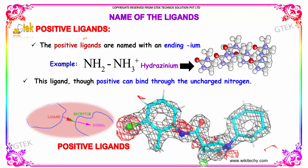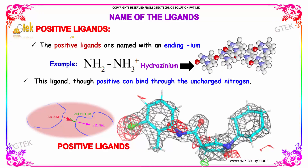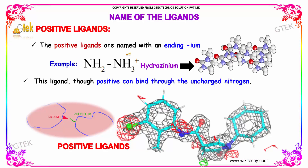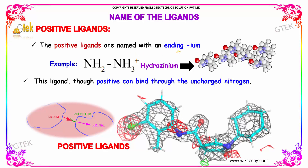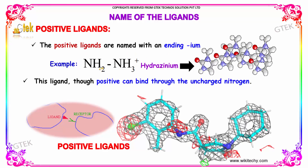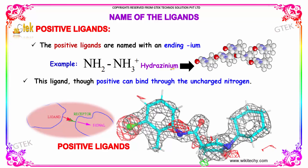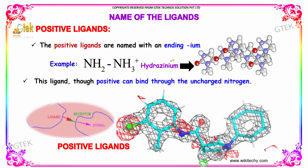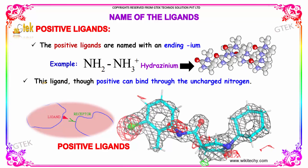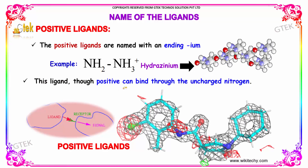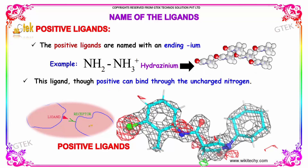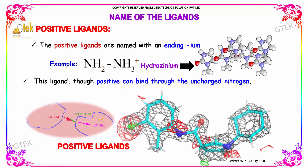Now, let's talk about the positive ligands. The positive ligands are named with an ending '-am'. For example, hydrazinium. This ligand, though positive, can bind through the uncharged nitrogen.